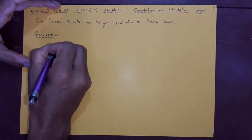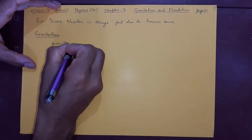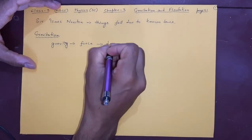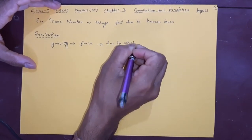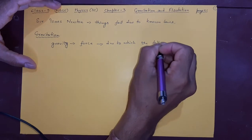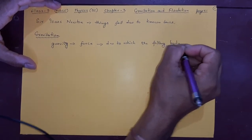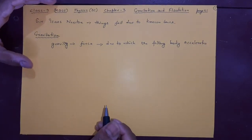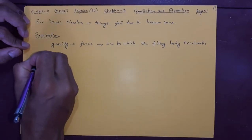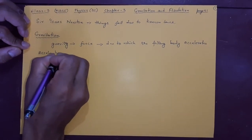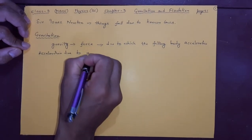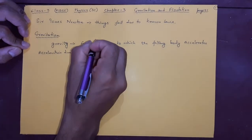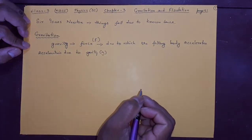So he gave the name gravity. What is gravity? It is a type of force due to which any falling object accelerates — meaning its velocity increases rapidly. This acceleration is called acceleration due to gravity, denoted by small g. The force is denoted by F.